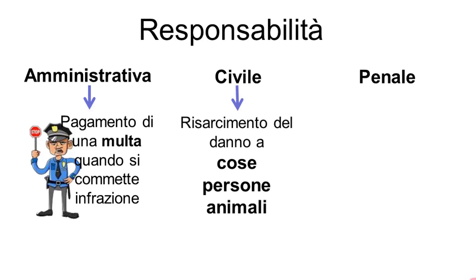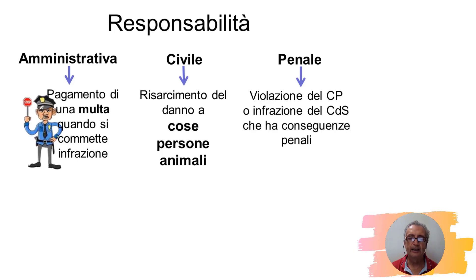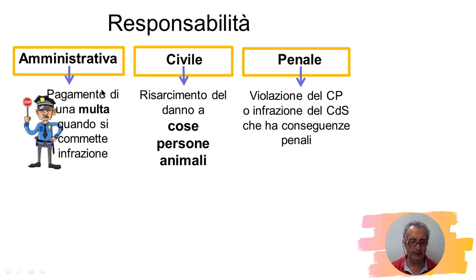La responsabilità civile: quando di fronte a un danno provocato, a qualcosa che noi abbiamo causato, siamo tenuti a pagare il danno fatto, e questo di fronte a cose, persone o animali. La responsabilità penale invece riguarda il mondo penale, cioè una violazione del codice penale o un'infrazione del codice della strada che porta conseguenze di tipo penale. Queste tre responsabilità sono praticamente indipendenti tra loro.